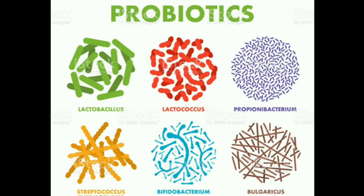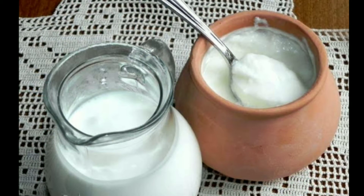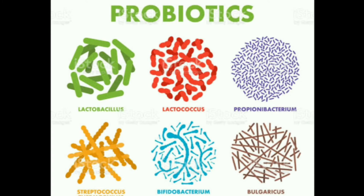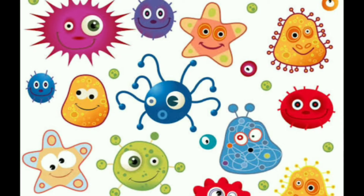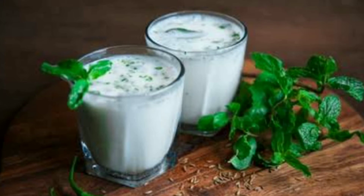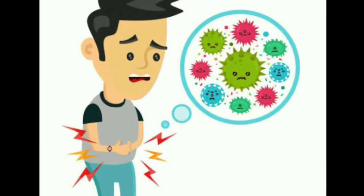Probiotics. Useful microorganisms which convert milk into yogurt are present in yogurt and buttermilk. They are called probiotics. Lakhs of microorganisms reside in our intestines, and their presence in such large numbers is essential for our health. To maintain them, we should include probiotics such as yogurt and buttermilk in our daily diet. When we suffer from loose motions and vomiting, we throw out microorganisms along with intestinal water, and some medicines can also kill them.